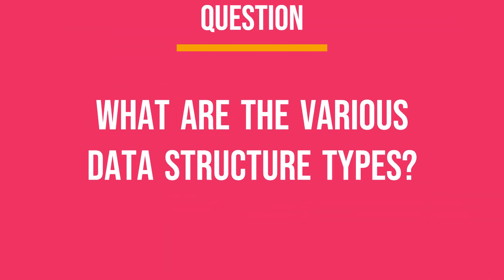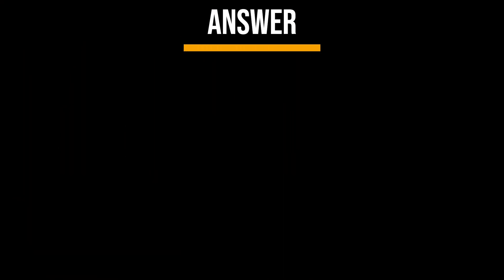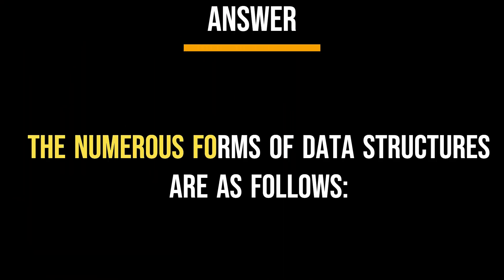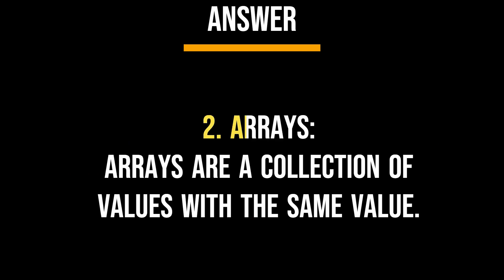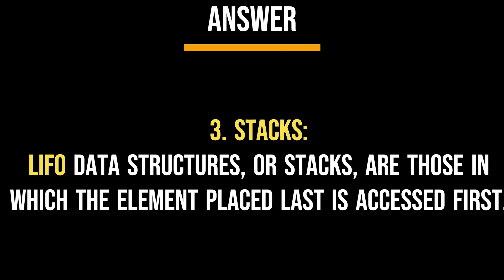What are the various data structure types? The numerous forms of data structures are as follows. 1. Lists — a collection of related objects that are linked to the data items before and after them. 2. Arrays — a collection of values with the same data type. 3. Stacks — last in first out, or LIFO data structures, are those in which the element placed last is accessed first.